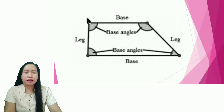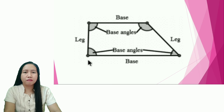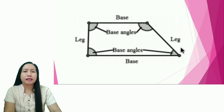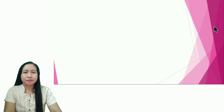Here are the parts of a trapezoid. The first part is the base — the upper and lower sides. Next, the left side and right side are called the legs. We also have the four angles, which are called the base angles. Those are the parts of a trapezoid.